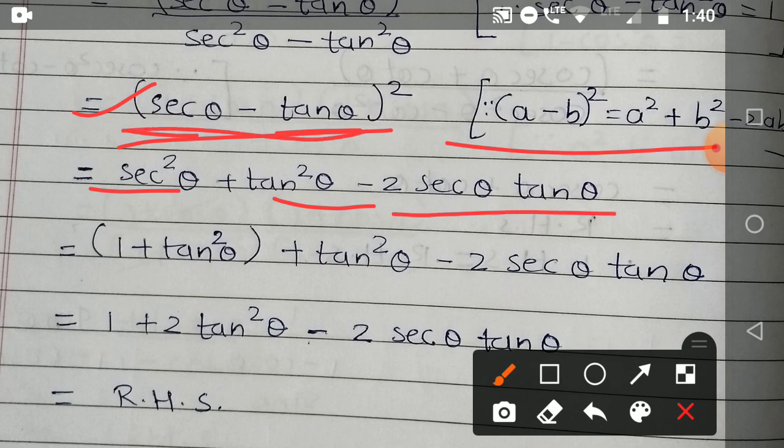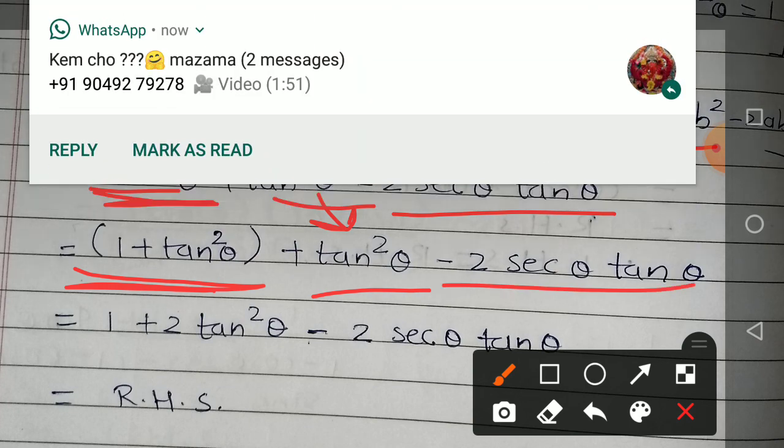Now this sec²θ we can also write from the identity as 1 + tan²θ. This tan²θ is as it is, and minus 2 sec θ tan θ.